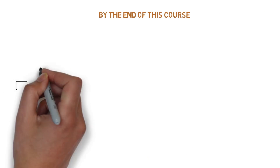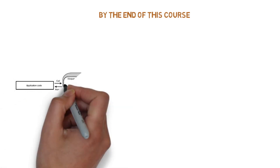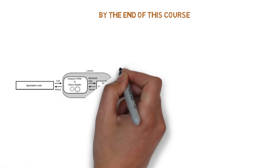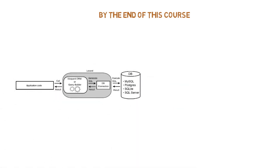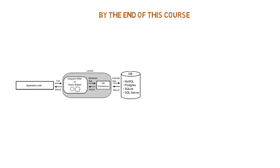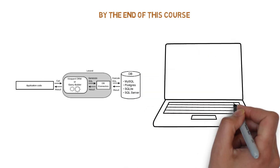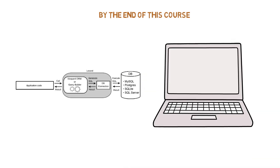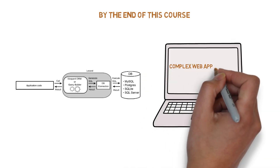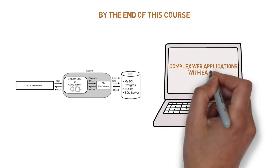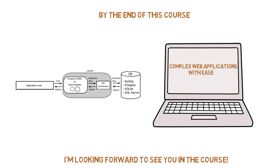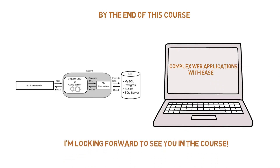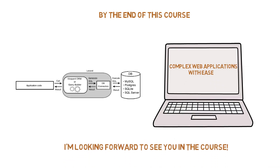From simple relationships such as the one-to-one relationship all the way to polymorphic relationships. By the end of this course you will have a deep understanding of migrations, factories, seeders, the query builder, Eloquent ORM and relationships, where you will be able to build a complex web application with ease. I'm looking forward to seeing you in this course.